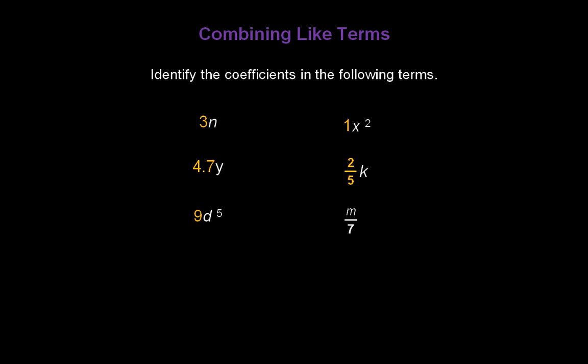Finally, m divided by 7. The coefficient may be hard to see in this case, so let's write it a different way. We know that m can also be written as 1m divided by 7. We can break the numbers away from the letter and write 1/7 times the letter m. Now it's easy to see the coefficient is 1/7.